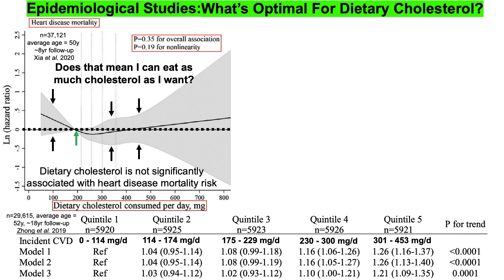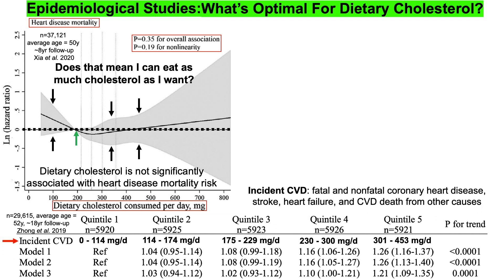In a similarly sized study — about 30,000 subjects, pretty close to the same age at 52 years old, but with a longer follow-up of 18 years — they looked at the incidence of CVD, cardiovascular disease, defined as fatal and non-fatal coronary heart disease, stroke, heart failure, and cardiovascular deaths from other causes. They divided their data into five quintiles: 0 to 114 milligrams per day, 114 to 174 (quintile 2), 175 to 229 (quintile 3), 230 to 300 (quintile 4), and greater than 300 (quintile 5).